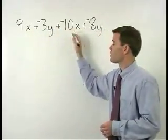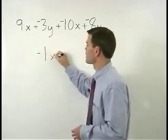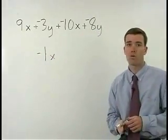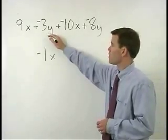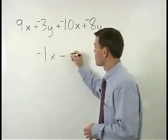9x plus negative 10x simplifies to negative 1x. Now let's combine our y terms. Negative 3y plus negative 8y simplifies to negative 11y.